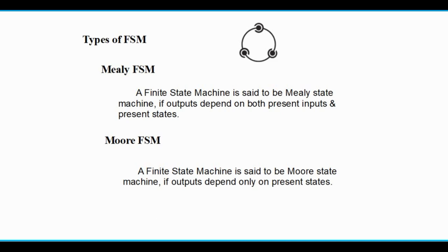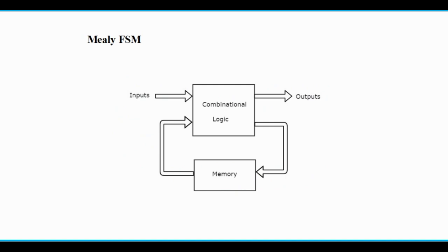There are mainly two types of FSM: Mealy FSM and Moore FSM. A Mealy FSM is a machine whose output depends on both present input and present state. A Moore FSM is a machine whose output depends only on present state. That is the main difference: in Mealy FSM, both present input and present state determine the output; in Moore FSM, only the present state determines the output.